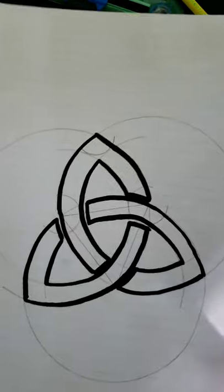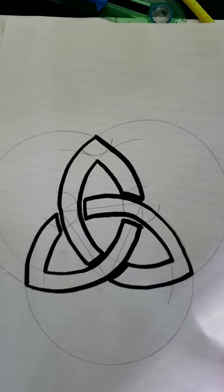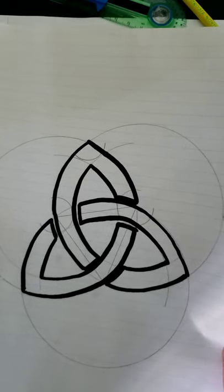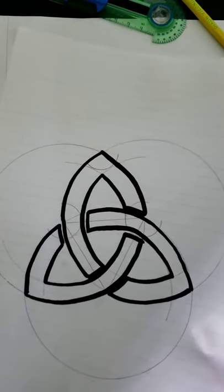So today we're going to make this thing using ruler and compass. This thing is called the tri-foil. It's a Celtic knot, a pretty nice decoration. It's pretty simple too, actually. It shouldn't take me that long to do this.